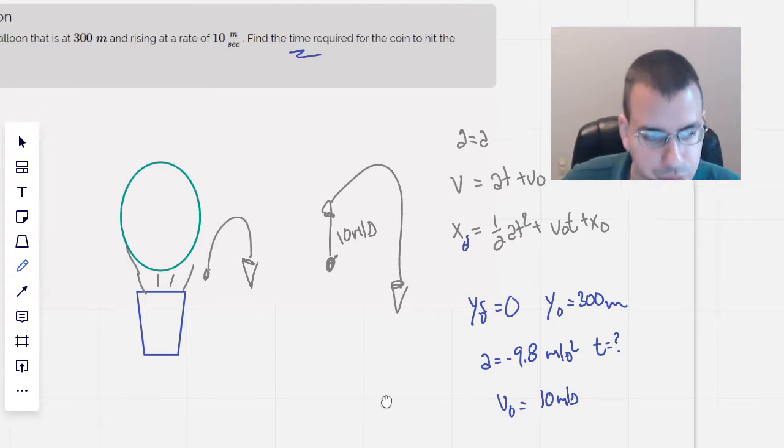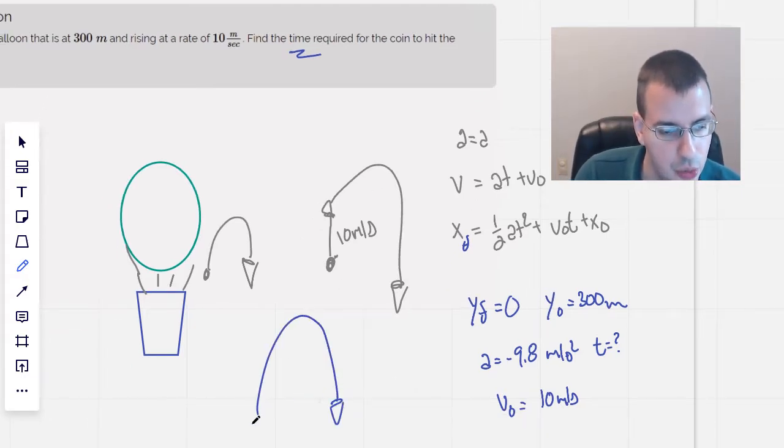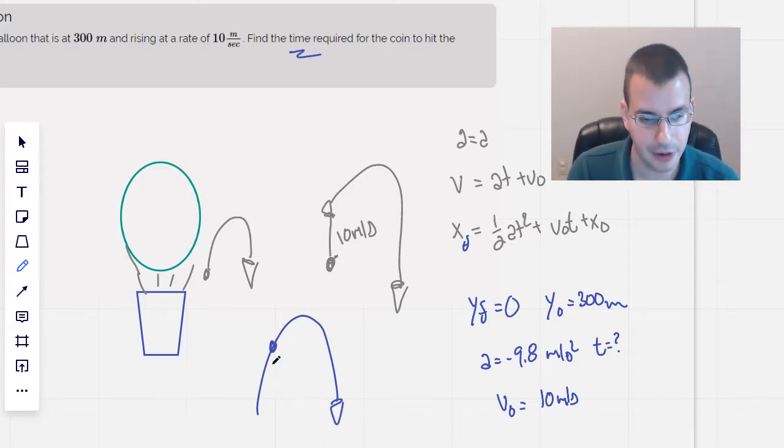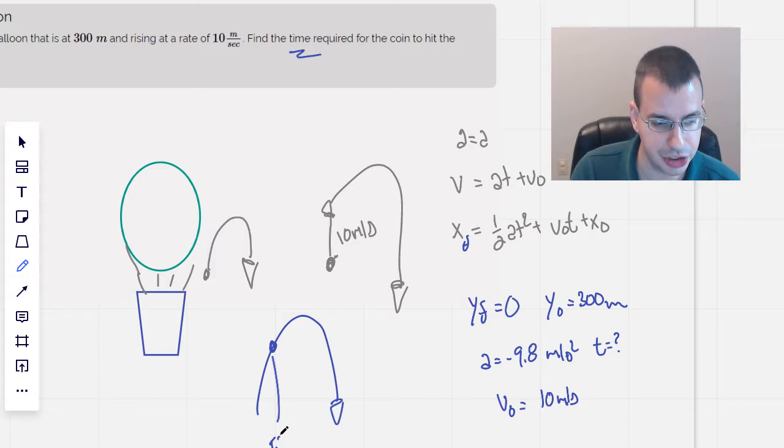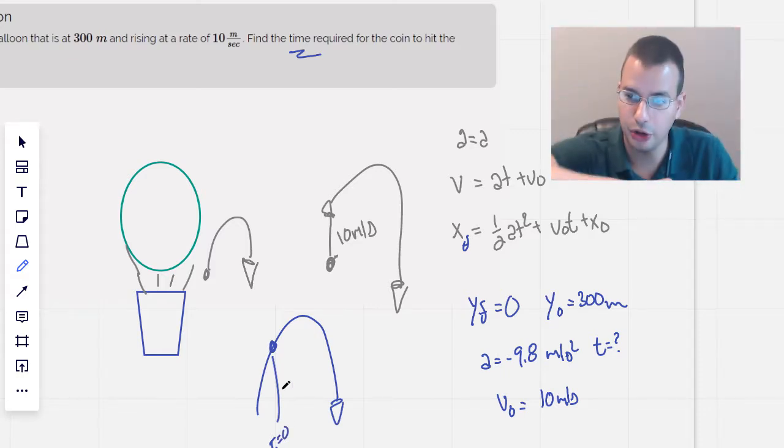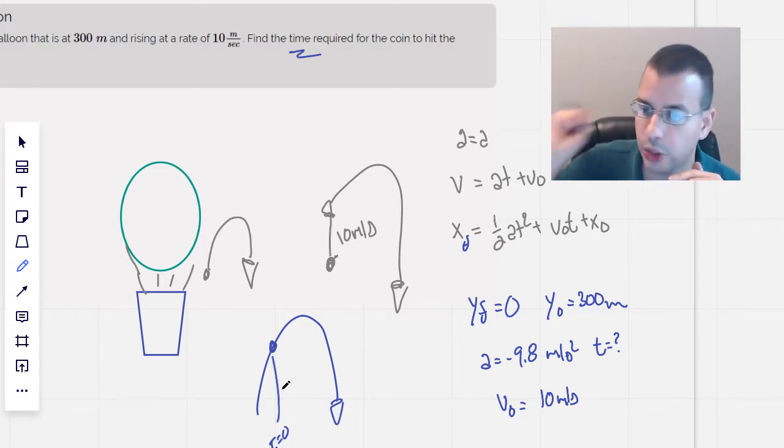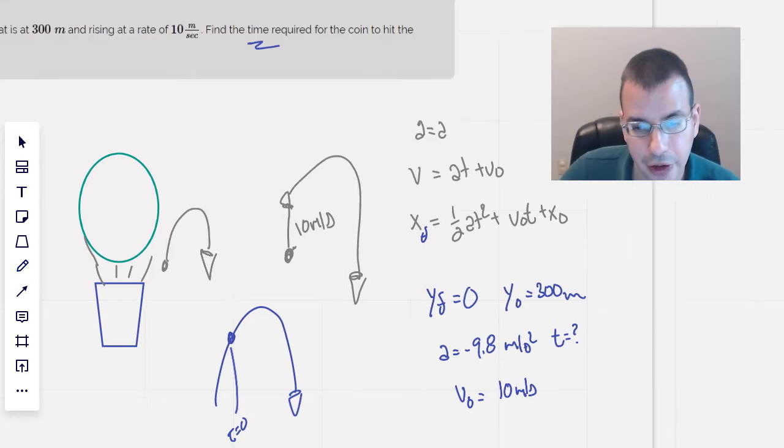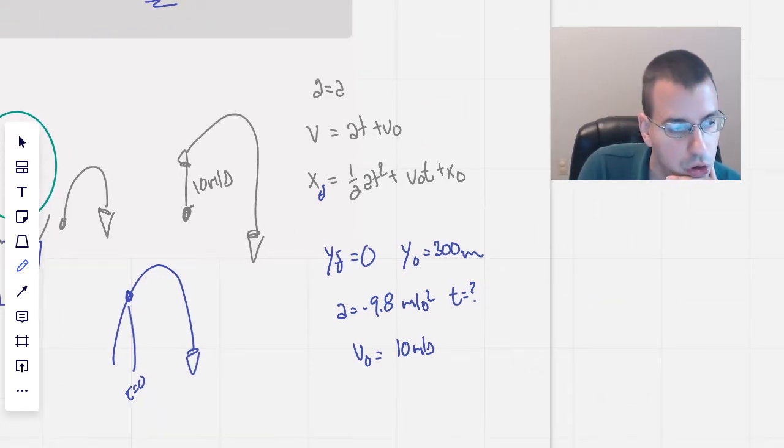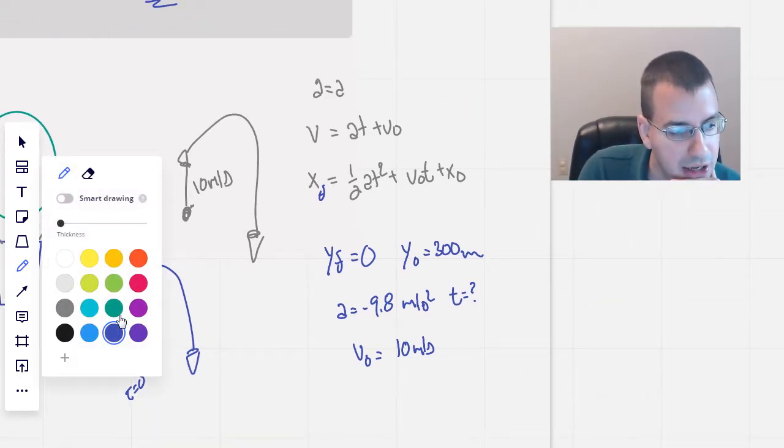So I think we're going to get a positive time and a negative time. So basically we'll get something that looks kind of like this, where the coin is actually thrown at this point, it comes up a little bit, then comes back down. And this will be time t equals 0. And basically if you backtrack that arc all the way, you'd find some negative time, theoretical negative time, when the coin would have been thrown from the ground.